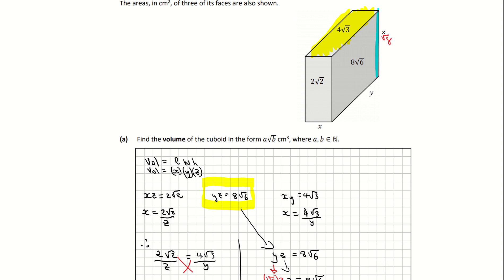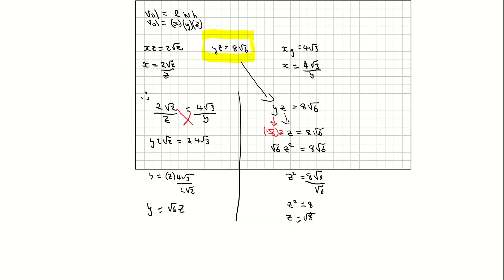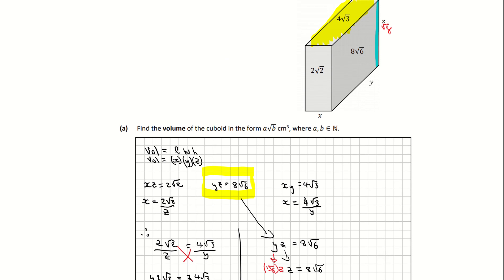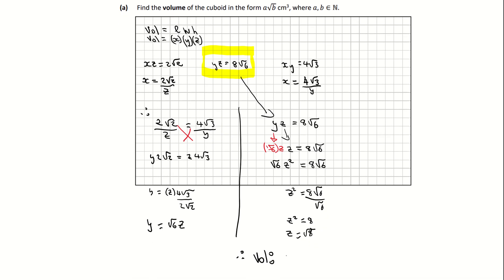If I multiply 4 root 3 by root 8, I will get the volume of that shape. So therefore, my volume is going to be 4 root 3 times root 8. And 4 root 3 by root 8 is giving me 8 root 6, and it doesn't simplify, and it's in centimeters cubed. So that is the volume of that cuboid.